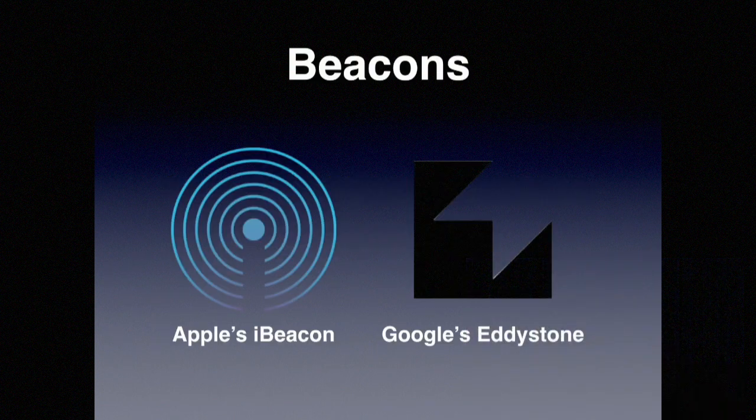The answer is in the form of beacons. At this moment, there are two main types of beacons. Apple pioneered the so-called beacon technology with iBeacon. Shortly after, Google said, 'Apple has got something, we need something as well,' and called its beacon technology Eddystone. Why do they call it Eddystone? I'll tell you later — and for those who get it right, I'll throw you a beacon.